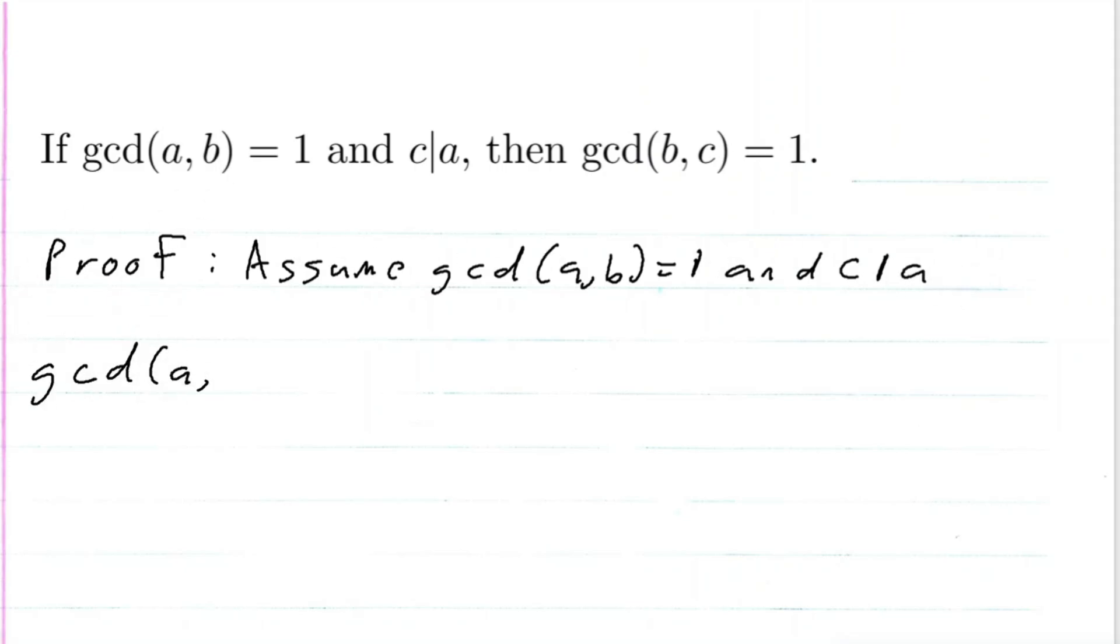Well, we know from the theorem, if we have the GCD of a and b equal to 1, theorem 2.3 in Burton's book, this implies that the linear combination ax plus by is equal to 1, where x and y are integers.